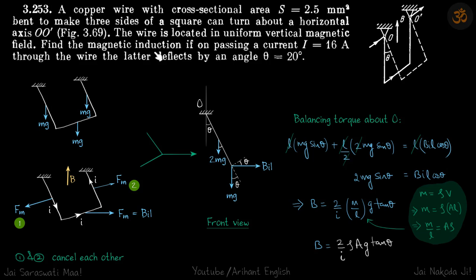Find the magnetic field if on passing a current I through the wire, the structure deflects by an angle theta. This U-shaped wire deflects by angle theta when you pass current through it. We need to find the value of magnetic field B given this angle theta.